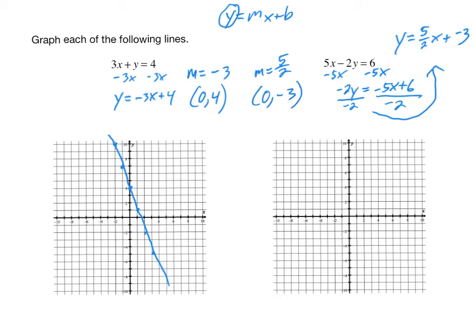Plot your point at (0, negative 3). We've got a slope of 5 halves, so if we go up 5, we'd want to go right 2 in order to have a positive slope. Or if you went down 5, go left 2. That is the graph of y equals 5 halves x minus 3, which is the same thing as 5x minus 2y equals 6.